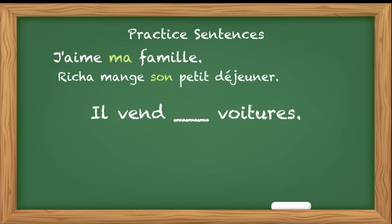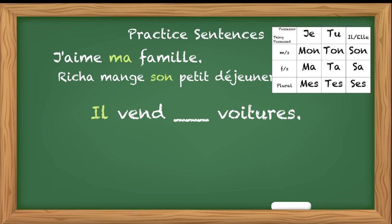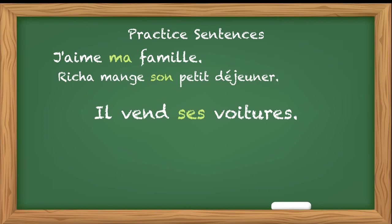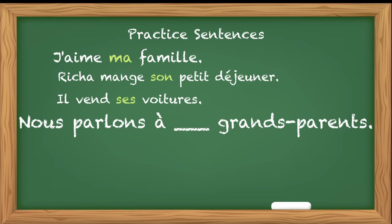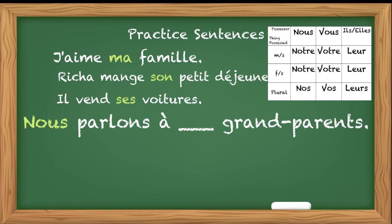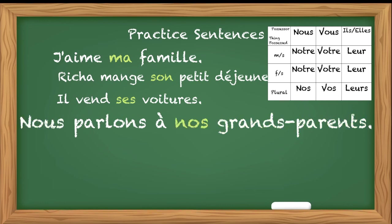'Ils vont ___ voiture.' To find the possessive adjective: the possessor is ils, and the thing possessed voiture is plural — so we go to the last row, which is ses. Ils vont ses voitures. Next: 'Nous parlons à ___ grands-parents' — We talk to our grandparents. Nous is the possessor, so we go to table two. Grands-parents is plural, so we write nos grands-parents.